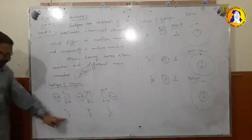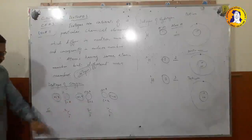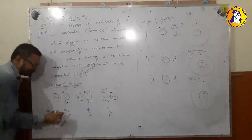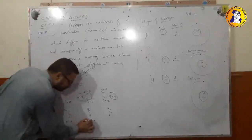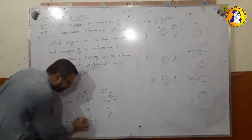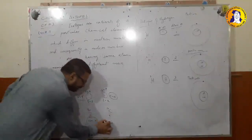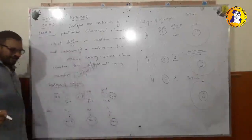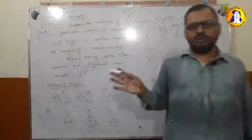Carbon is also found in three different isotopic forms. For carbon-12 (Z=6): N equals twelve minus six, which is six. For carbon-13: N equals thirteen minus six, which is seven. For carbon-14: N equals fourteen minus six, which is eight. So different elements are found in different isotopic forms.